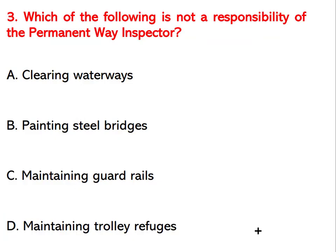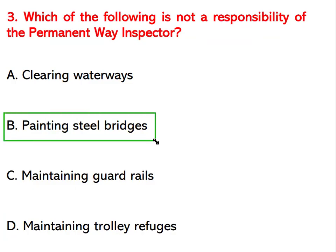Which of the following is NOT a responsibility of the permanent way inspector? Options are clearing water way, painting steel bridges, maintaining guard rails, and maintaining trolley refuges. Painting steel bridges is not the responsibility of the permanent way inspector.